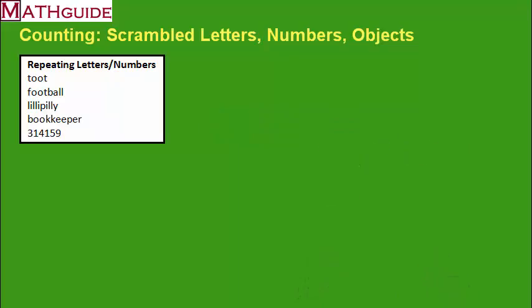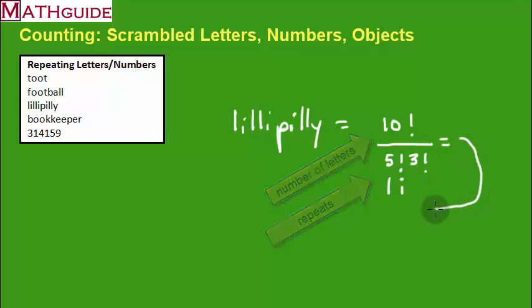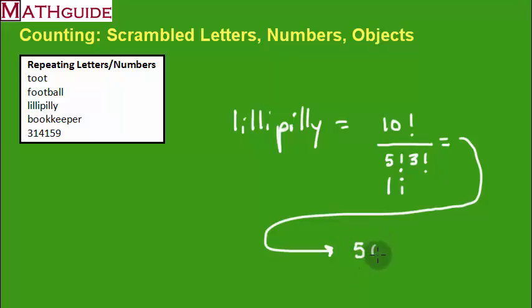Let's try one more. So I found a neat word, lilypilly, just a type of tree. I want to figure out how many ways I could scramble up these letters. Well, let's count them. One, two, three, four, five, six, seven, eight, nine, ten. There's 10 different letters. However, there's some repeats. I got some L's and some I's. Well, how many L's do I got? One, two, three, four, five. I'm going to put five factorial for the L's. How many I's? One, two, three. I'm going to plug this into a calculator. Turns out there's 5,040. Let's go to our next section.